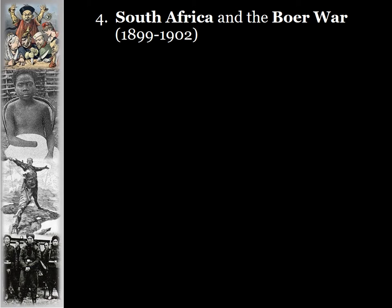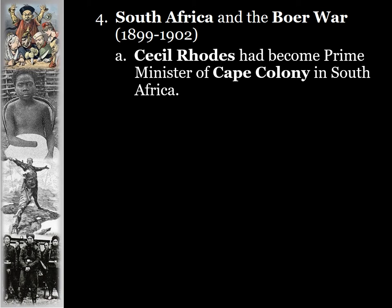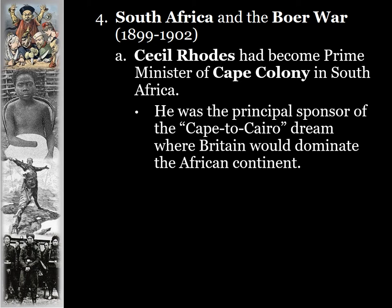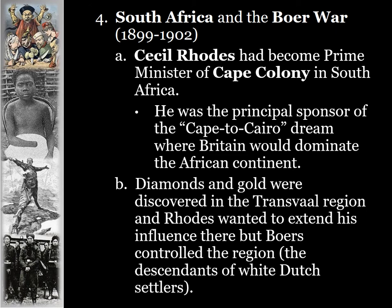South Africa and the Boer War, 1899 to 1902, begins with Cecil Rhodes — a British businessman who took a territory in South Africa and declared himself prime minister of what would be called Cape Colony. He was the principal sponsor of the Cape to Cairo dream where Britain would dominate the African continent from Cape Town in the south to Cairo in the north. Diamonds and gold were discovered in the Transvaal region and Rhodes wanted to extend his influence there, but the Boers controlled the region.